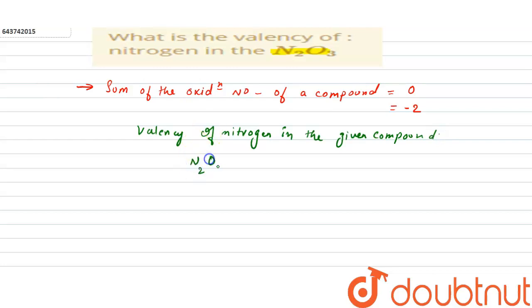N2O3 equals to N is plus three. So the valency of nitrogen in the N2O3 is plus three.